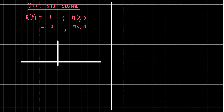The signal is zero all the while, and from n equals zero onwards it is one. So from zero onwards it is one — for every value of n greater than or equal to zero it is one, and for the remaining values it remains zero and this continues.